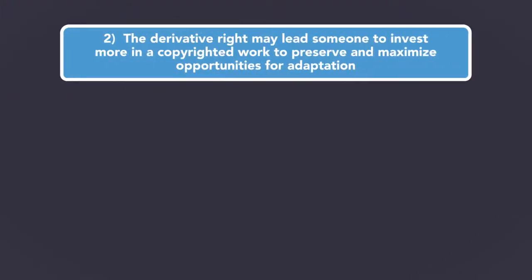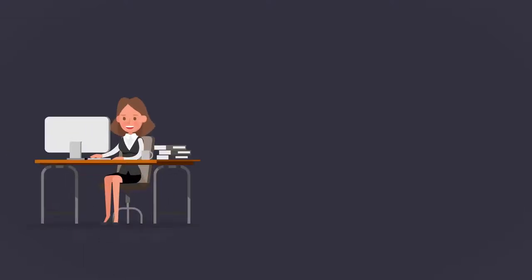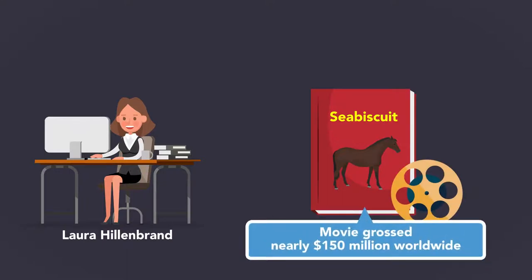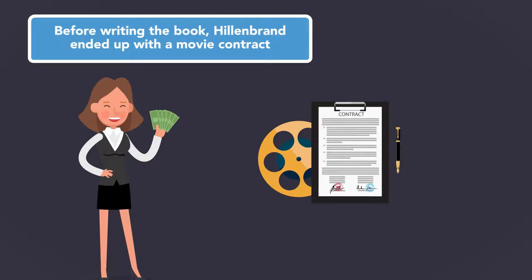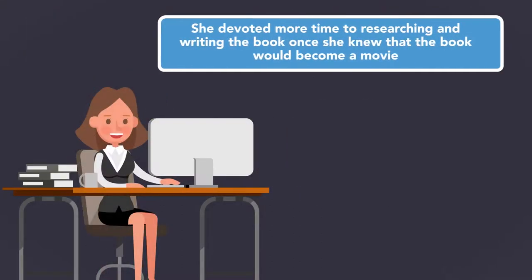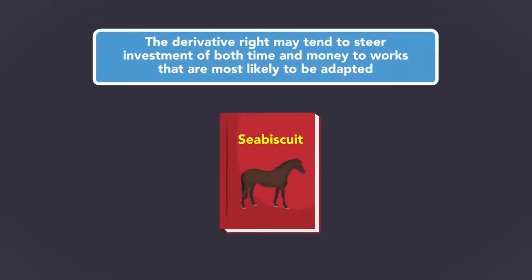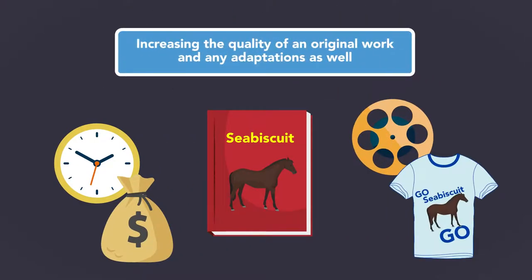Second, the derivative right may lead someone to invest more in a copyrighted work to preserve and maximize opportunities for adaptation. Laura Hillenbrand wrote the non-fiction bestseller Seabiscuit, which became a hit movie that grossed nearly $150 million worldwide. Before writing the book, Hillenbrand ended up with a movie contract, and it's possible that she devoted more time to researching and writing the book once she knew it would become a movie. So the derivative right may tend to steer investment of both time and money to works that are most likely to be adapted, increasing the quality of an original work and any adaptations as well.